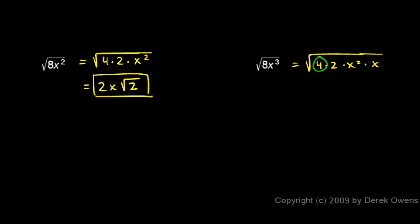So this 4 will pop out and become a 2, and this x squared will become an x outside the radical. So let's just think it through. I have the square root of 4 right there, which is a 2. So that's taken care of. I have a square root of x squared right there, which is an x. So that's taken care of.